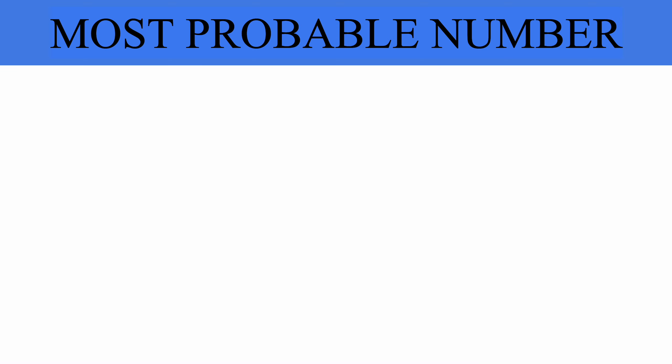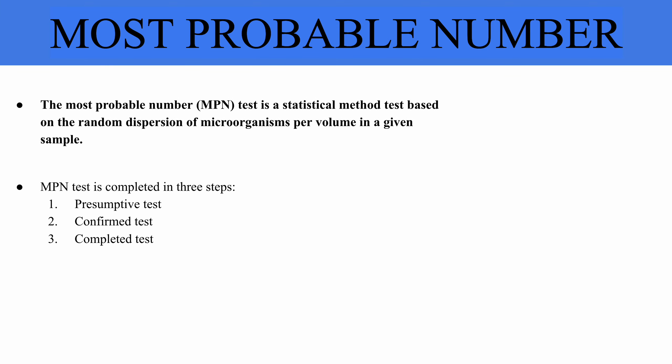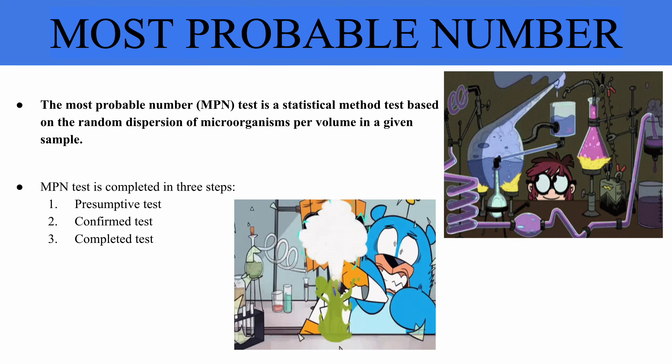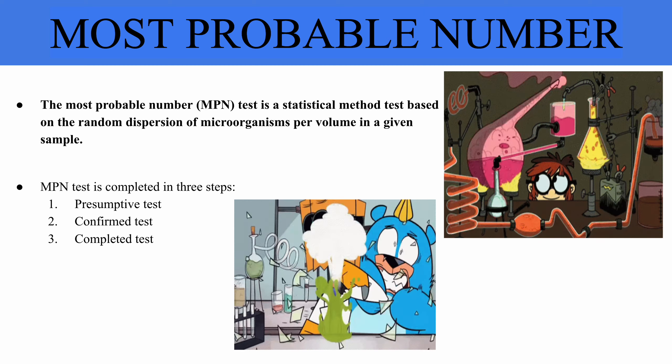The MPN test is a statistical method based on the random distribution of microorganisms in a sample. This involves adding measured volumes of water to tubes with a liquid indicator growth medium. Tubes showing growth and color change indicate the presence of bacteria, while those without bacteria remain unchanged.